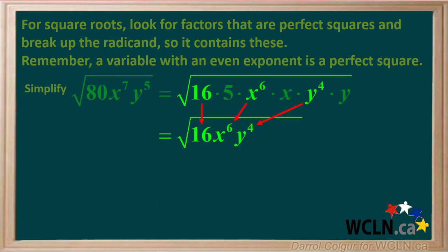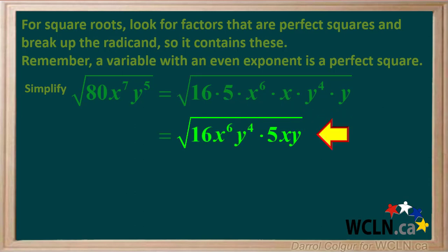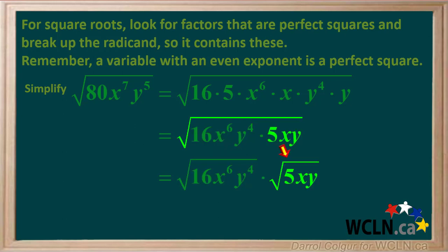We'll rearrange the radicands so the perfect squares — 16 times x to the 6th times y to the 4th — are together on the left side, and the leftovers — 5 times x times y — are together on the right side. So now we have this expression, and we'll break it up into two separate square roots: the square root of 16x to the 6th y to the 4th times the square root of 5xy.